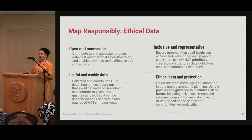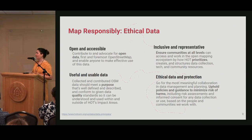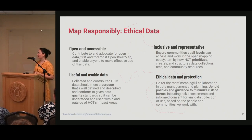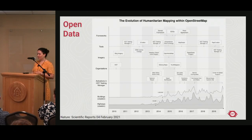The way we approach data is through four data principles. The first is open and accessible data, which I think everyone in this room really identifies with. Also useful and usable data — things can get tricky if you're not creating data that's actually usable. Inclusive and representative is another one this audience can identify with — we want communities at all levels to access and contribute to OpenStreetMap to show the reality of their communities. And finally, ethical data and protection — making sure we consider the political context and sensitivities everywhere we work, which is often in humanitarian contexts.